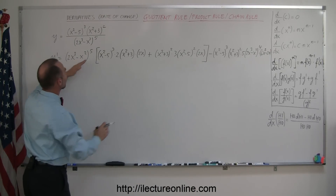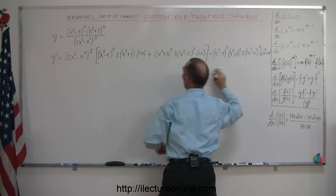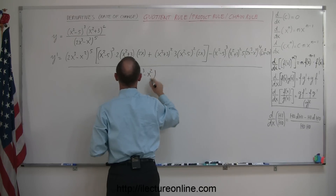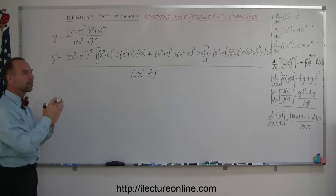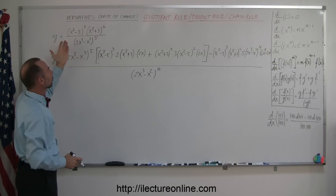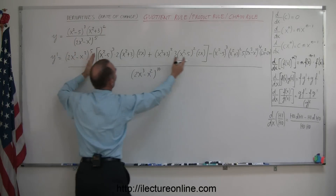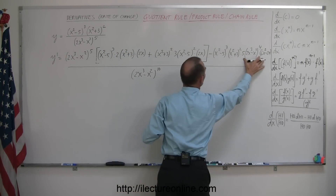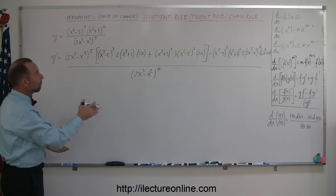So it's the denominator times the derivative of the numerator — which is the product — minus the numerator times the derivative of the denominator, all over the denominator squared. That would be 2x cubed minus x squared to the fifth power, squared, which means to the tenth power. So again, it's always good to go back and make sure we did this correctly. We have a combination of a product in the numerator and a quotient, so we used the quotient rule, then the product rule, then the chain rule, all divided by the denominator squared. At this point we have found the derivative of our problem.